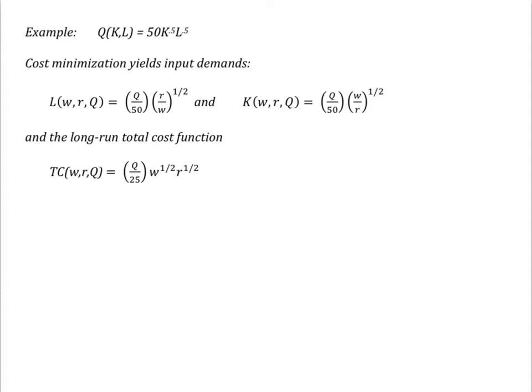Duality theory argues that I can reverse the process. From this total cost function, I can recover the economically relevant portion of the production function. I say economically relevant because it won't allow me to observe any sections of the production function that are not quasi-concave, that fail to yield a local cost-minimizing combination of labor and capital.